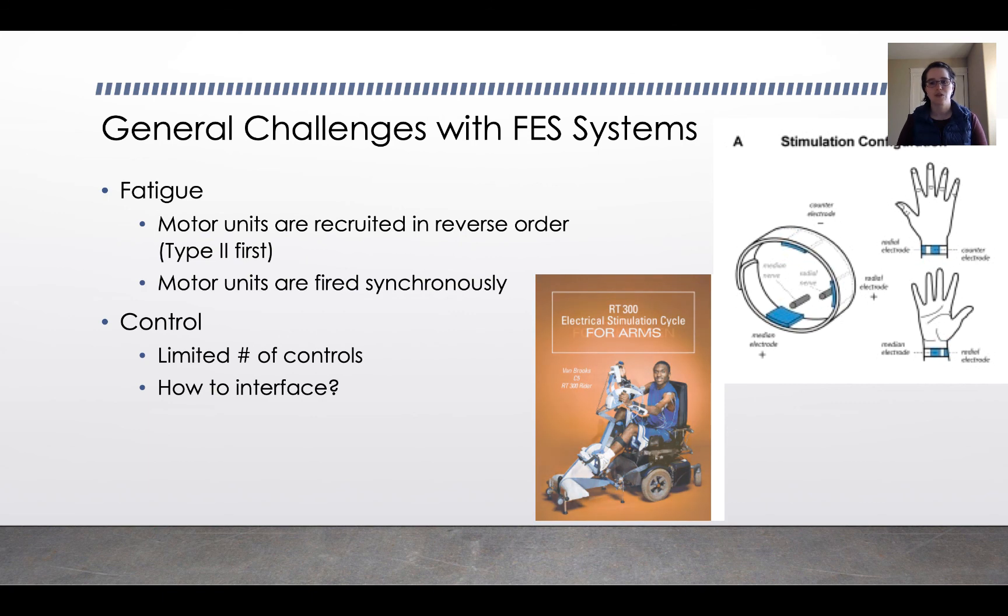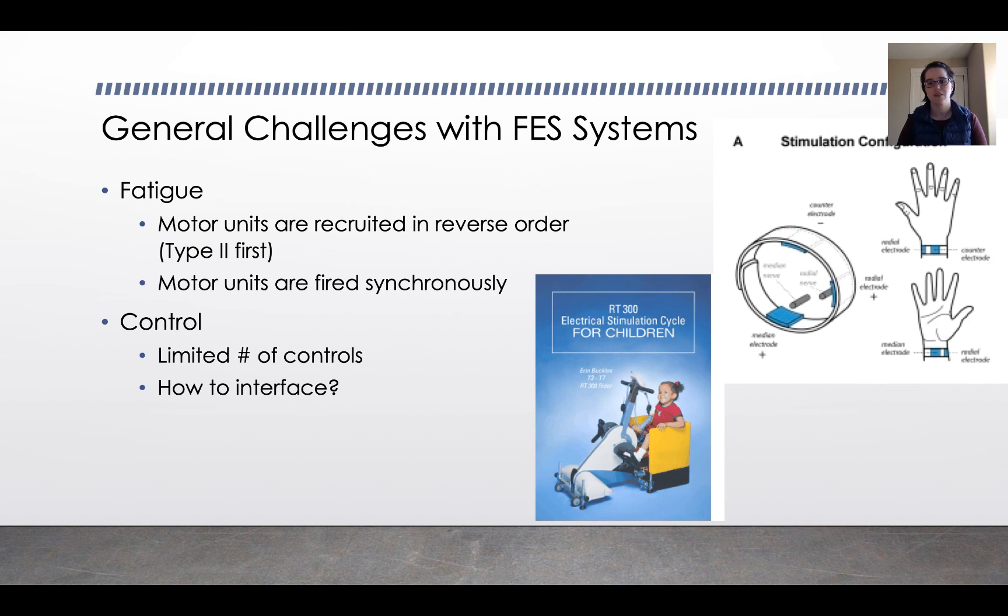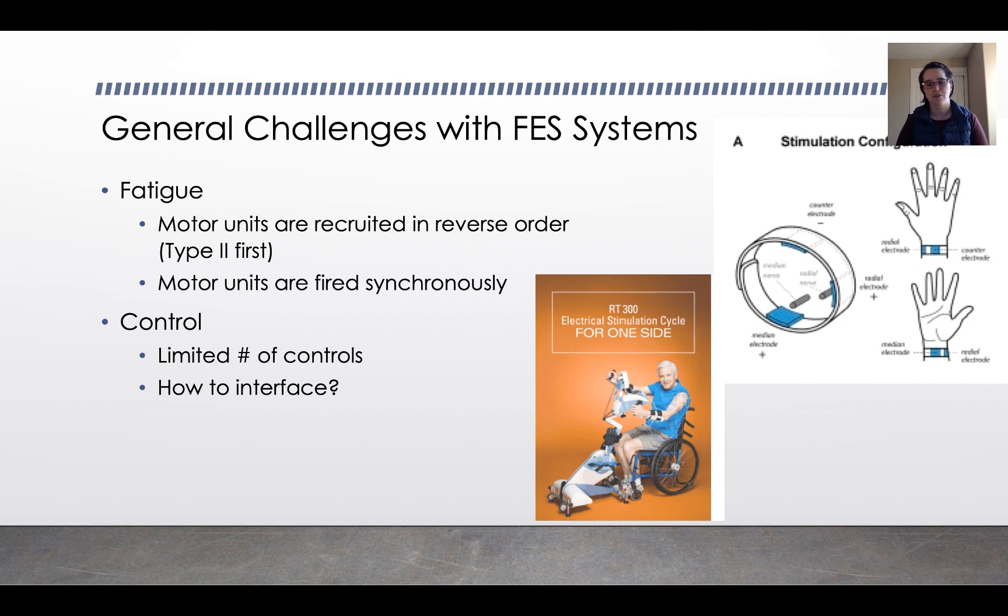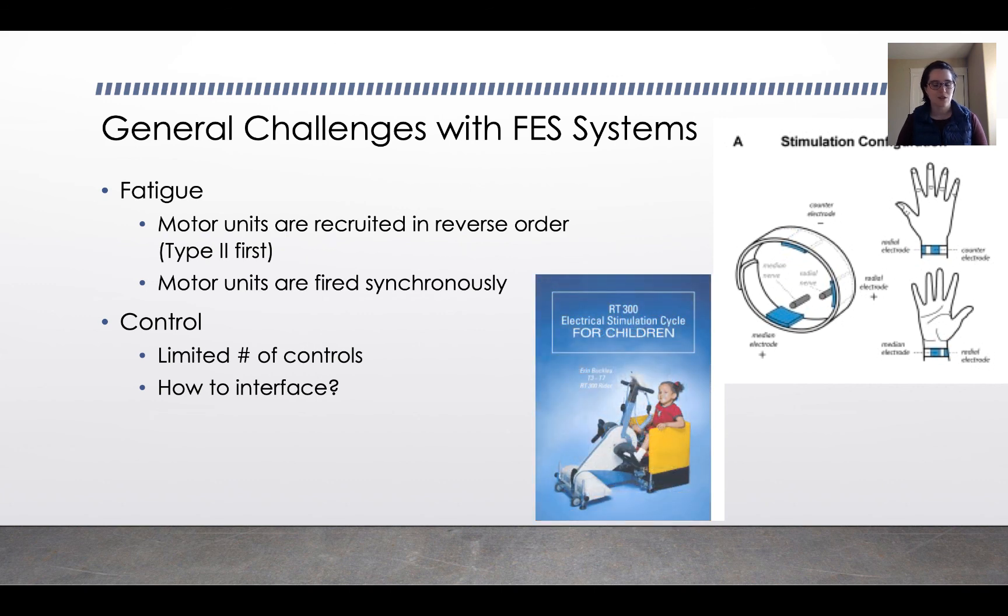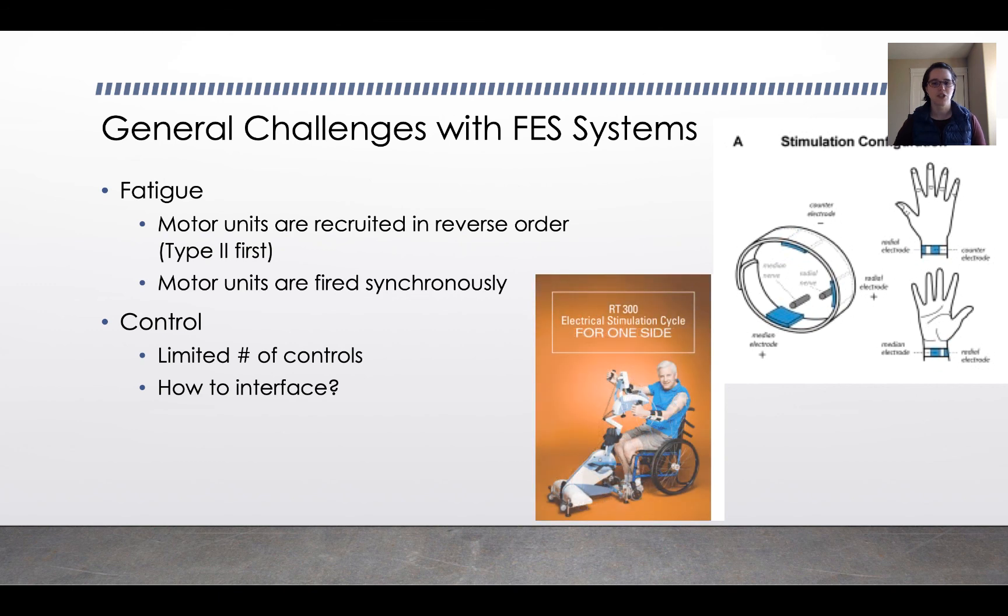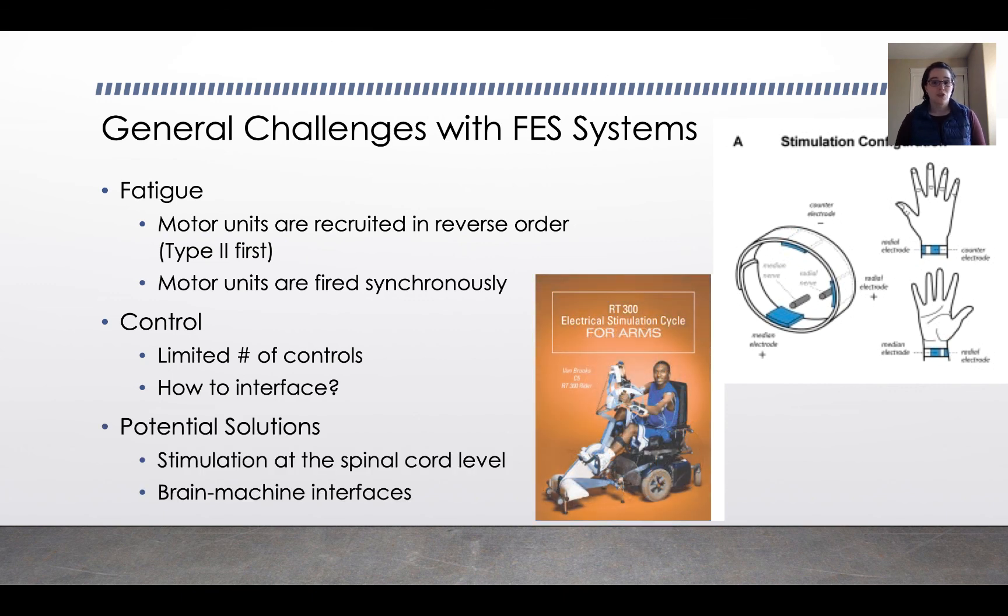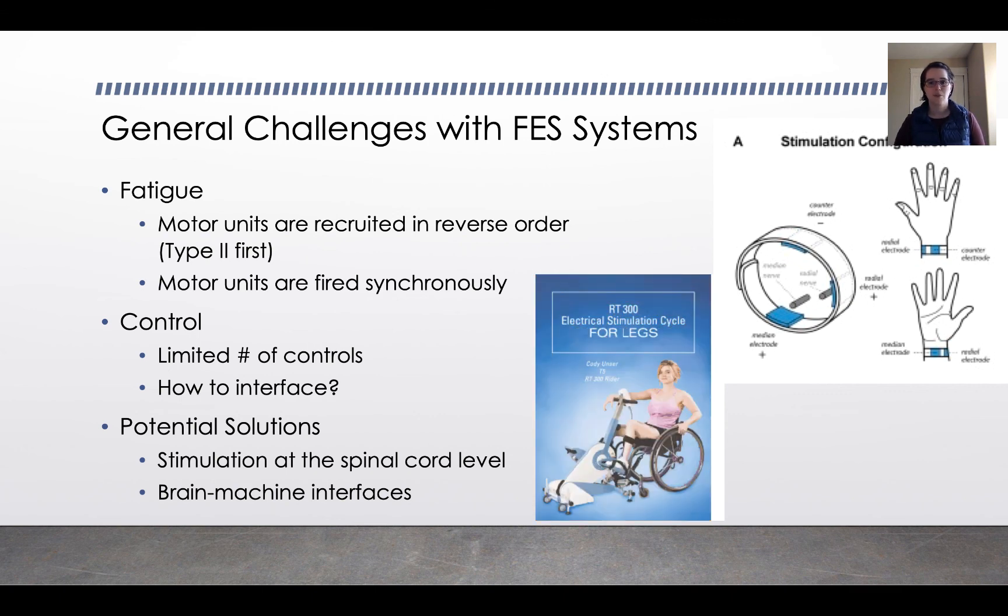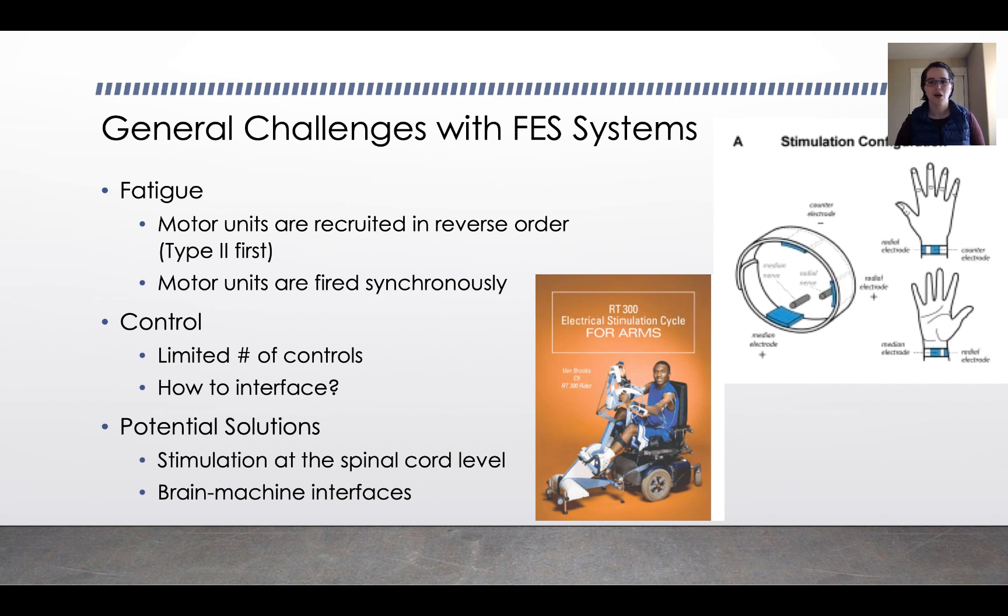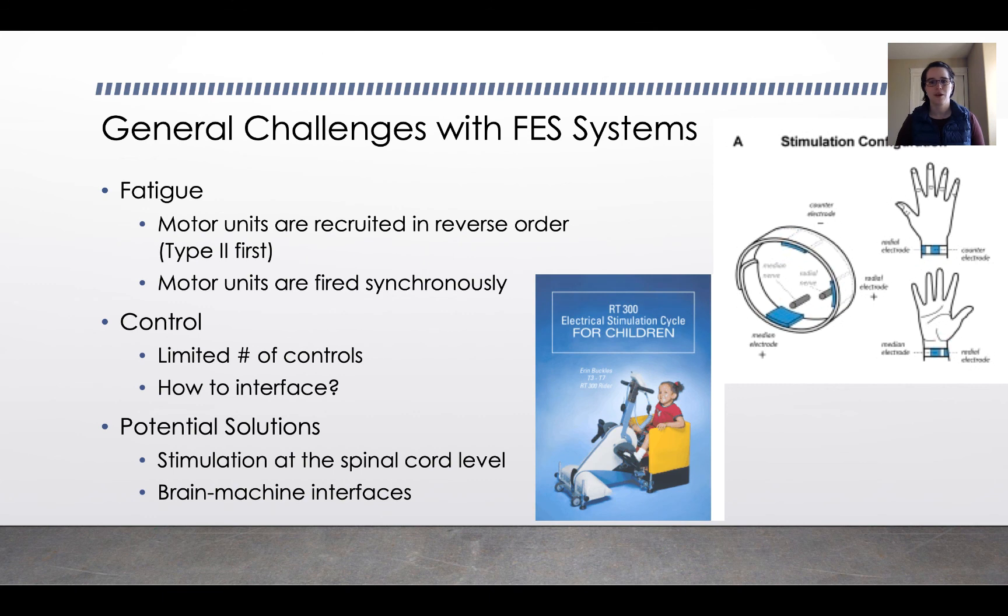Second challenge with functional electrical stimulation is control. There's a limited number of controls and it's difficult to know how to interface. With something like the tremor stimulation, subjects wore the bracelet for a short amount of time and then drew the circles and they saw an effect that lasted for a short period of time, but not for multiple days. And if you're talking about neural stimulation to control a prosthetic, you've got even more challenges with how to interface. So there are some solutions, particularly for prosthetic stimulation. You could stimulate at the spinal cord level or you could have a brain-machine interface. This is a really interesting area of engineering to develop and to explore. It's a combination of electrical engineering and mechanical engineering and control systems, all tied up together into an interesting and cool biological application package.